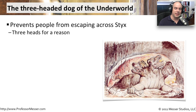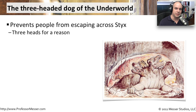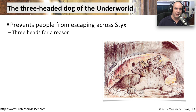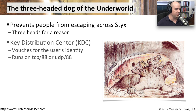Kerberos, or Cerberus, is a mythological creature — the three-headed dog of the underworld. Its job was to keep people from escaping across the river Styx. But it had three heads for a reason, and that's why we call this Kerberos: because there are three components to this.